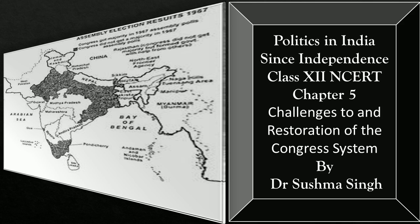Now, what was the electoral verdict? It was in this context of heightened popular discontent and the polarization of political forces that the 4th General Elections to the Lok Sabha and the state assemblies were held in February 1967. The Congress was facing the electorate for the first time without Nehru. The result jolted the Congress at both the national and the state level. Many contemporary political observers described the election results as a political earthquake. The Congress did manage to get a majority in the Lok Sabha, but with its lowest tally of seats and share of votes since 1952.